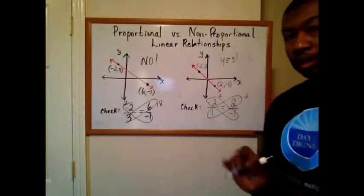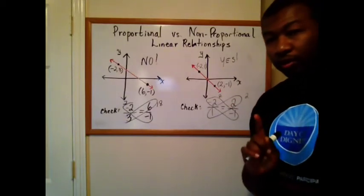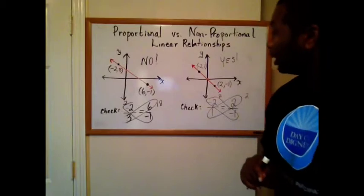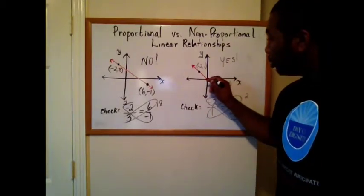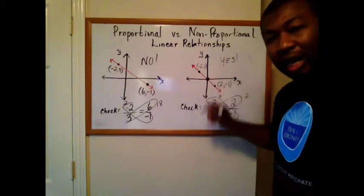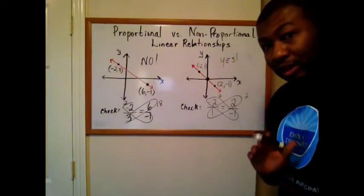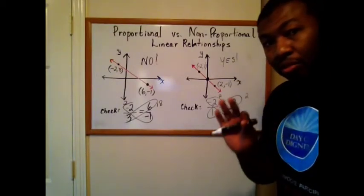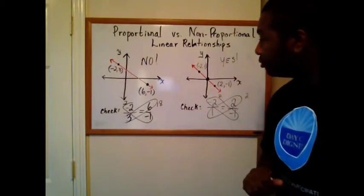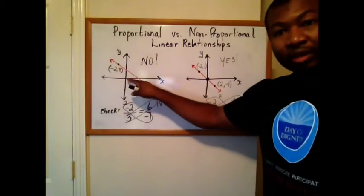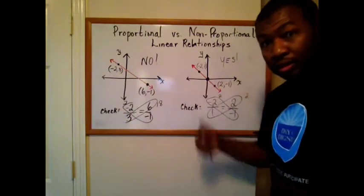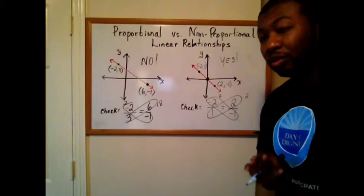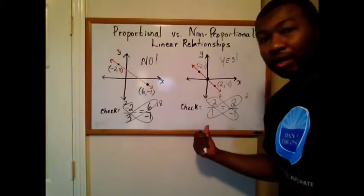And here's a trick. Here's a shortcut. For those of y'all who are interested in shortcuts, anytime you have a graph and it passes through the origin, anytime the line passes through the origin, it is proportional. Does it pass through the origin? Not proportional. Passes through the origin? Proportional. If you remember that, you don't have to work it out.